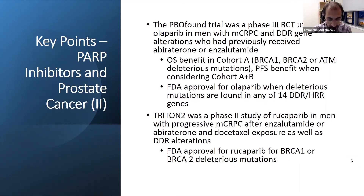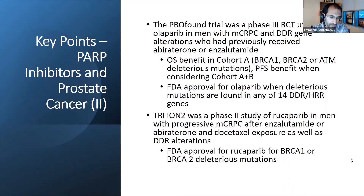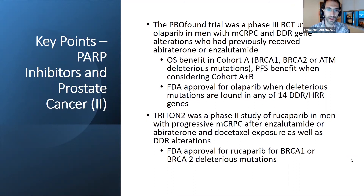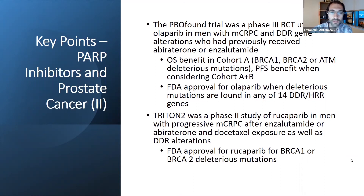Triton 2 was single-arm with no control arm. The FDA approval was only for BRCA1 and BRCA2 mutations, even though the study allowed other genes — they chose to only submit the BRCA1 and BRCA2 data for the accelerated approval. Because there was no control arm, they couldn't use PFS or OS as a primary endpoint, so they used objective response rate by RECIST criteria and achieved an objective response rate of about 40% in BRCA1/2 patients — quite respectable — along with a PSA 50% response rate of over 50%. Based on that, the FDA granted accelerated approval and required proof of a long-term outcome like PFS or OS for full approval, leading to the phase three Triton 3 study.